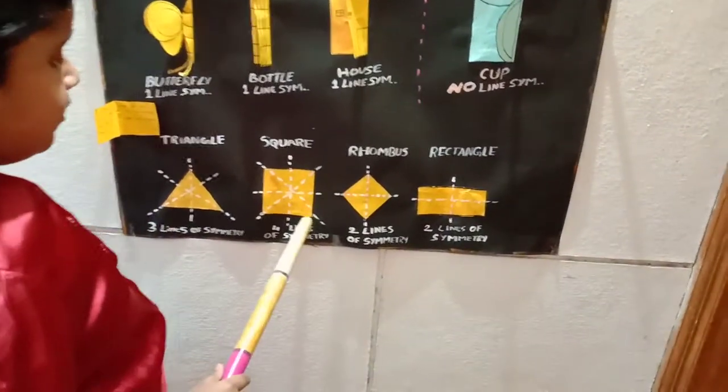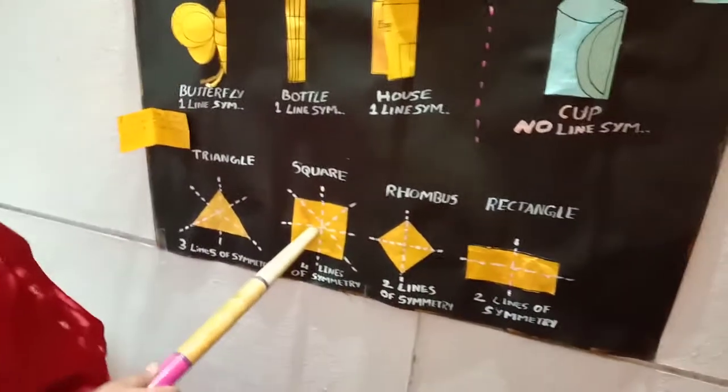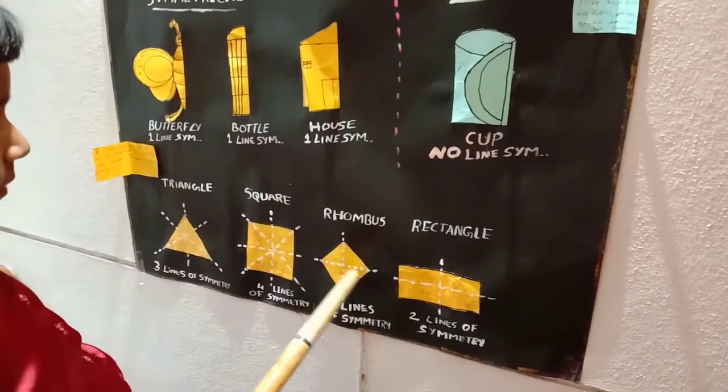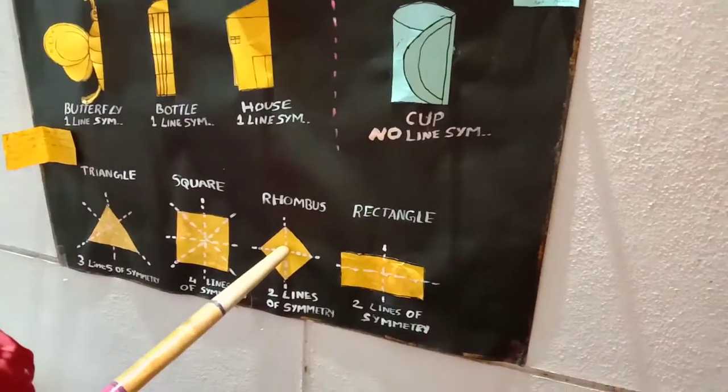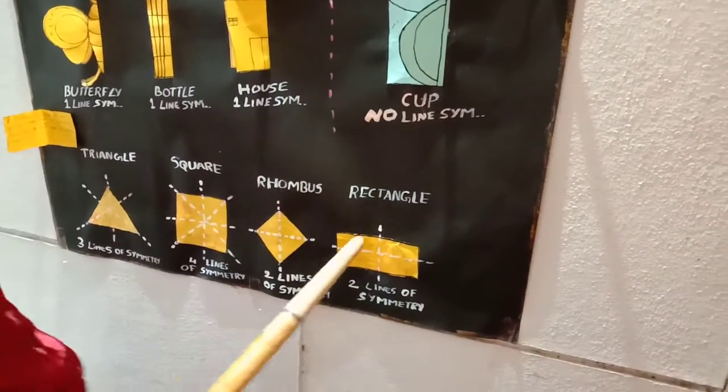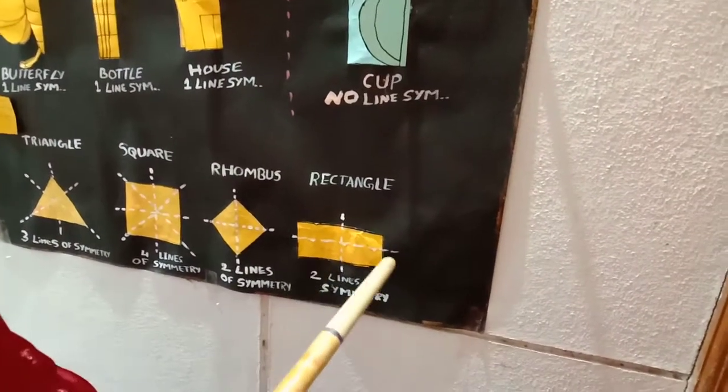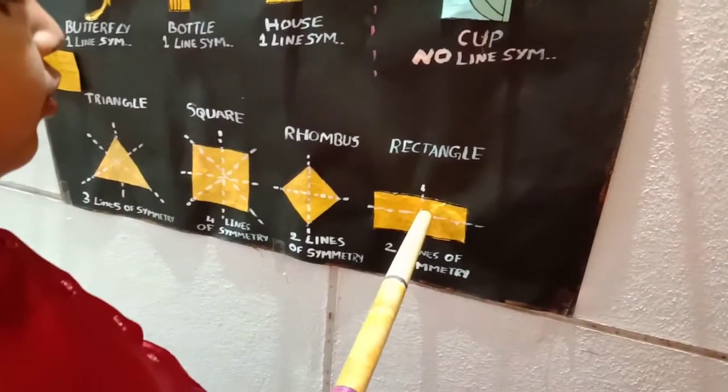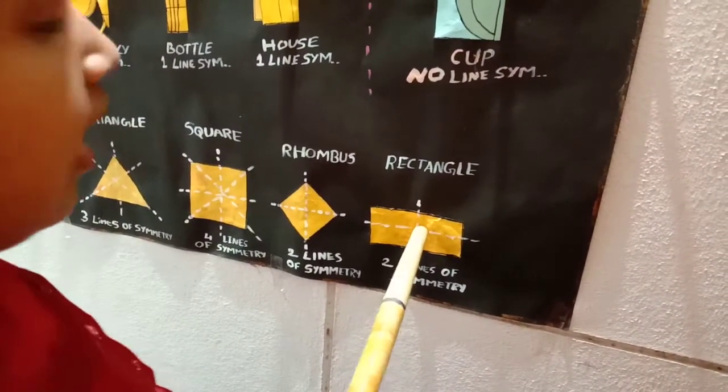Square has four lines of symmetry and is divided into four identical halves. Rhombus has two lines of symmetry and can be divided into two identical halves. Also rectangle has two lines of symmetry and can be divided into two symmetrical halves.